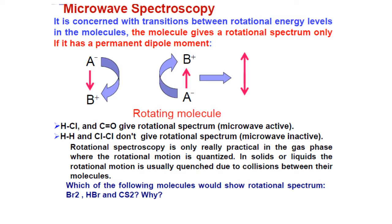A molecule gives a rotational spectrum if it is subjected to microwave radiation if and only if it has a permanent dipole moment. Dipole moment is the distribution of electrical charges among the atoms. If one atom is more electronegative than the other atom forming the bond, the electron clouds will shift more towards the more electronegative species, resulting in a partial negative charge on the electronegative species and a partial positive charge on the electropositive species — giving us a dipole.